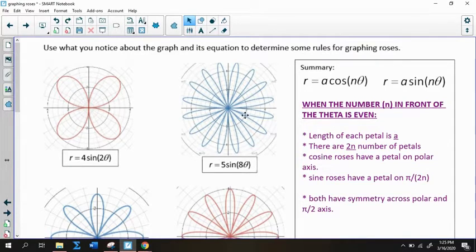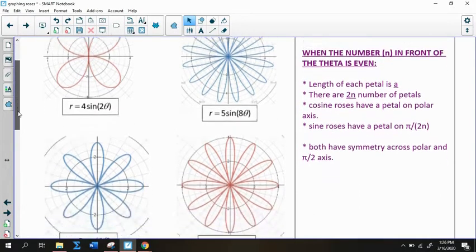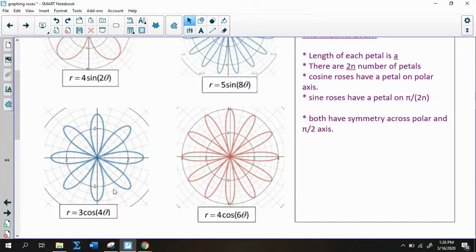Notice that the length of each petal, if you can tell from the graph, is the number out front. So I have 4 sine 2 theta. So I went out to the fourth. Here's the second circle. Here's the fourth circle. The length of the petal is 4. And there are 2n numbers of petals, meaning whatever number is in front of the theta, if it's even, we double it, and that gives us the number of petals. So this is a 2, so I have 4 petals. This is an 8. This rose has 16 petals. Down here, this is a 4, so we have 8 petals. This is a 6, so we have 12 petals.